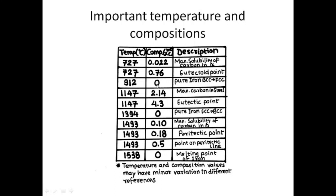If we observe 0 weight percentage carbon, that means pure iron at 912 degrees Celsius, we can see that pure iron changes its crystal structure from BCC to FCC because of its allotropic nature. At 1147 degrees Celsius and 2.14 weight percentage carbon, we have maximum carbon in steel, which defines the range of percentage carbon in steel.